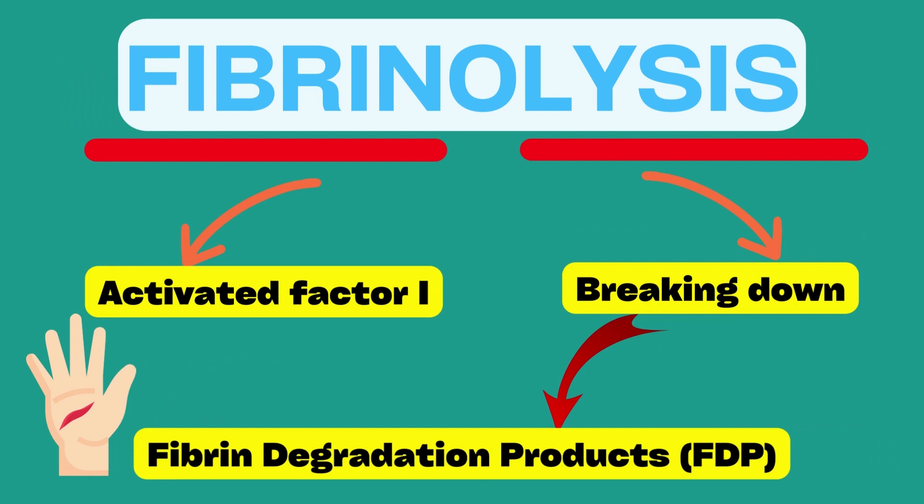Let us first break the term down. Fibrin is activated factor 1. Lysis means breaking down. Hence, fibrinolysis means breaking down of fibrin. Fibrin is dissolved into small soluble products called fibrin degradation products, or FDP.